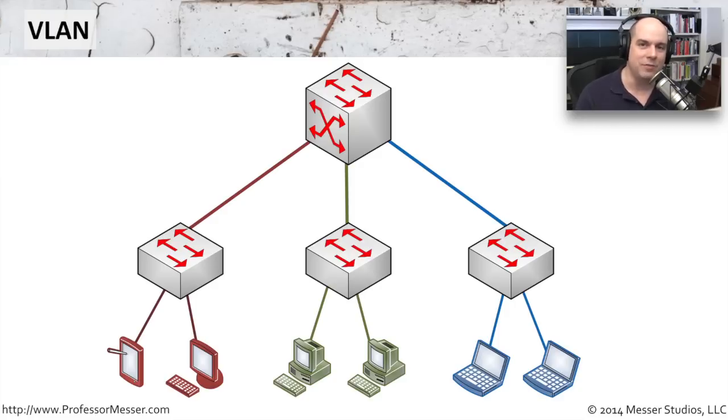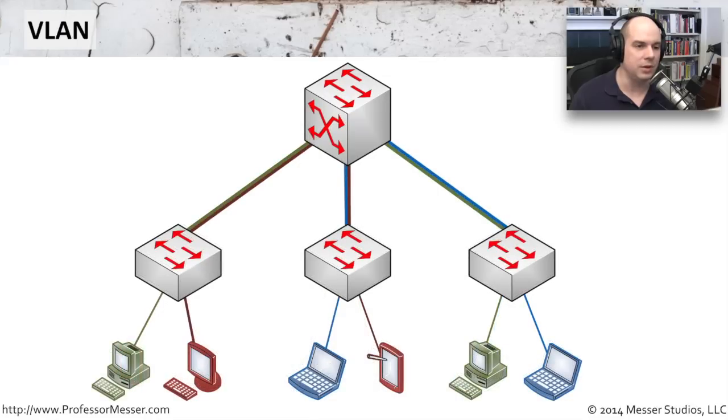We can't always have people physically located all in the same place. So we do have a capability in our switches called trunking that will take multiple VLANs and trunk them up to a central switch and be able to route between different VLANs, so that you can have a green and a red VLAN plugged into one switch.